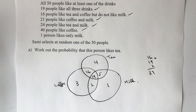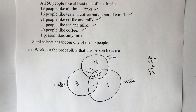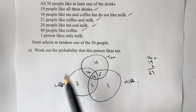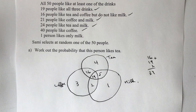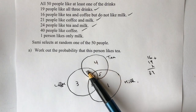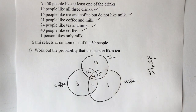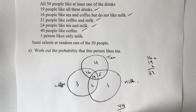That's how you build up this Venn diagram. It takes a little bit of practice to work out how it fits together, but if you work methodically you should be able to come up with a solution. Now it says: Sammy selects at random one of the 50 people — work out the probability that this person likes tea. All we need to do is add up all the values in the tea circle, which comes to 44, so the answer is 44 out of 50.